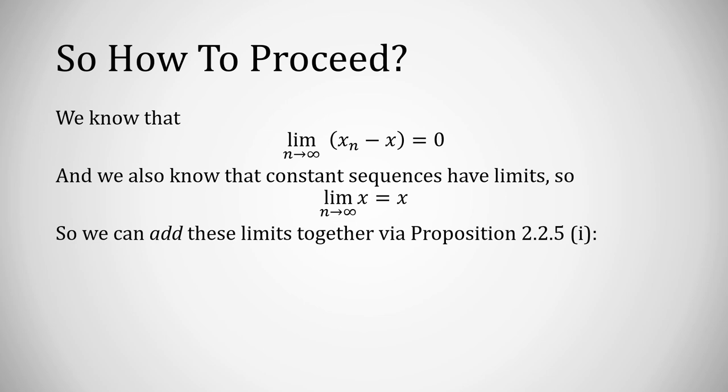So we can use Proposition 2.2.5 now to add these limits together. The first limit plus the second, we know they both exist. Therefore, that is the limit as n approaches infinity of xn minus x plus x.